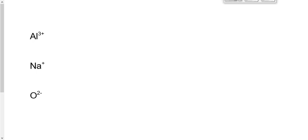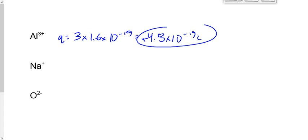Sometimes we see ions. An ion is a charged atom — it's an atom that's gained or lost electrons, leaving it with a net charge. This is aluminum, an aluminum ion with a charge of 3+. The 3+ means it has a charge of 3 times the elementary charge, or 4.8 times 10 to the minus 19 coulombs — positive because it's 3+. This O²⁻, on the other hand, would have a charge of negative 2 times 1.6 times 10 to the minus 19 coulombs, which gives us negative 3.2 times 10 to the minus 19 coulombs.